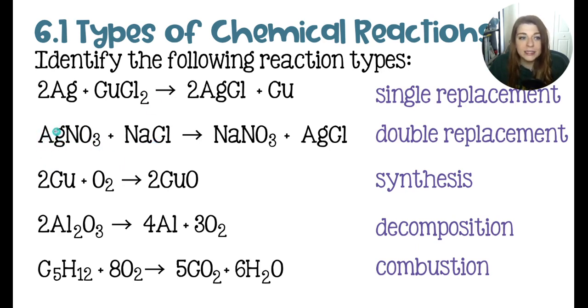What happens is the positive silver is going to pair up with the negative chloride, while the positive sodium will now go pair up with the negative nitrate. It's important to remember the order when we do this. The positive and negative ions are always going to pair up with each other. You will never have two positives and then two negatives pair up because they repel.